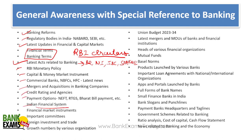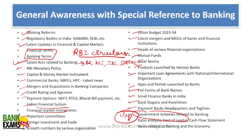Further general awareness topics include: credit rating, payment options, Indian financial system, financial market instruments, committees, foreign investment, growth numbers by various institutions, India's GDP growth rate, union budget, major mergers and acquisitions, heads of financial organizations, mutual funds, Basel norms, products launched by various banks and institutions, important loan agreements, apps and portals launched by banks, full forms of banks, small finance banks, bank slogans, payment banks and headquarters, banks' CEOs and MDs, headquarters locations, and government schemes. RBI circulars are very important.